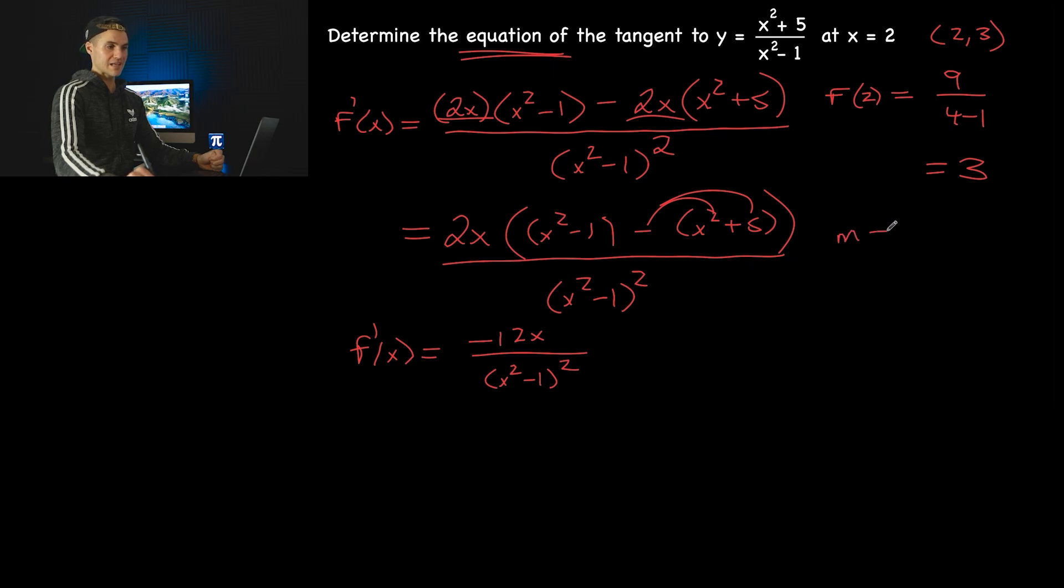And now if we wanted to find the slope of the tangent at that specific x value, we've got to plug in that x value of 2 into the derivative here. So that would give us negative 24 for the numerator. And then 2 squared, 4 minus 1 is 3. 3 squared is 9. And then this simplifies to negative 8 over 3. So that right there ends up being our slope of the tangent.